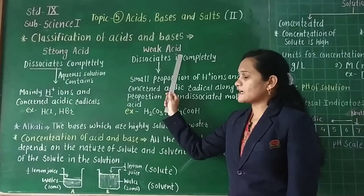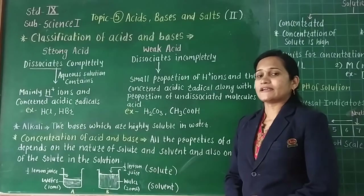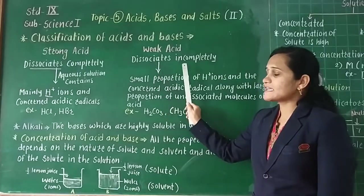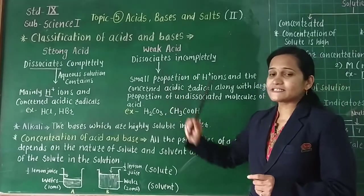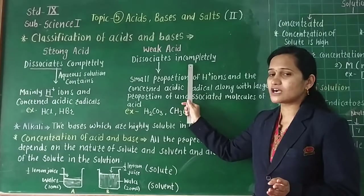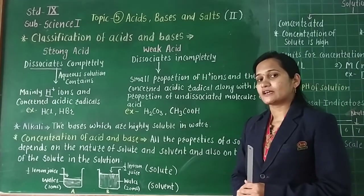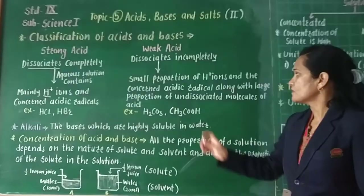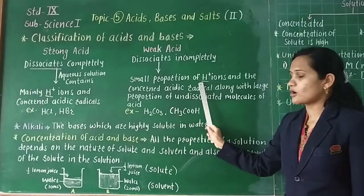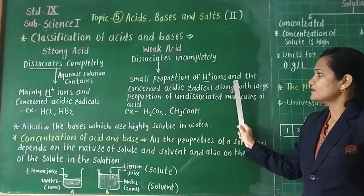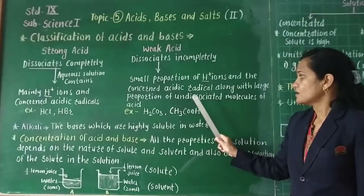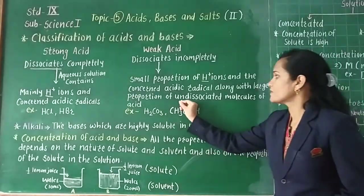Now let us see the weak acid. Weak acid means, when the acid dissolves in water, it dissociates incompletely. This acid does not go into a free state completely. Dissociation occurs incompletely and the aqueous solution contains a small proportion of H+ ions and the concerned acidic radicals, along with a large proportion of undissociated molecules of acid.